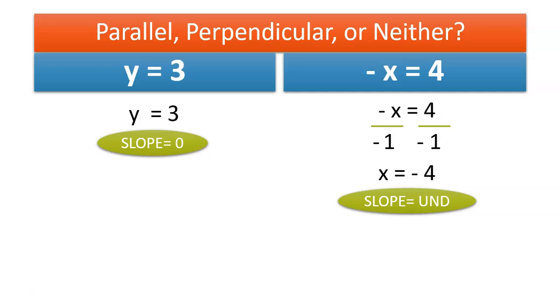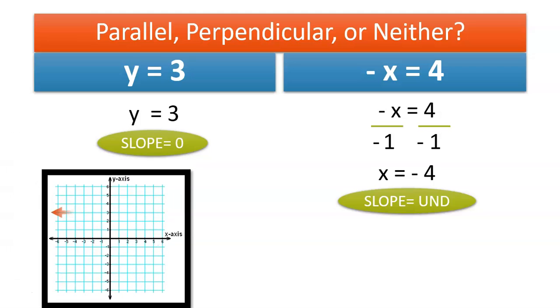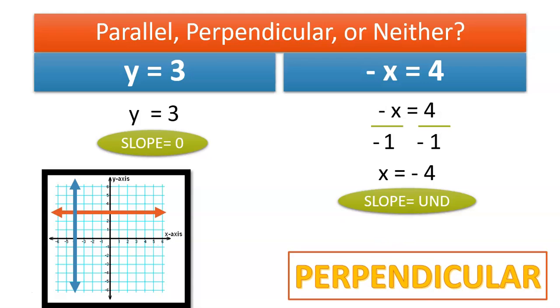In our x equations, our slope is undefined. So if you think about what these equations look like when they are graphed, here is your y = 3 line and your x = -4. So you will notice that if you have a horizontal and vertical line, you will find that your equations are perpendicular.